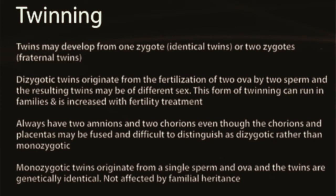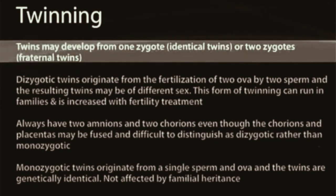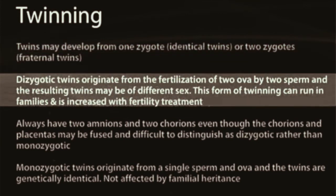Twinning in general will be a high-yield topic for board preparation. Twins can develop in two separate ways: one zygote, which gives you identical twins, or two zygotes, which gives you fraternal twins. Dizygotic twins come from the fertilization of two ova by two sperm, and the resulting twins will be of different sex. This form of twinning can run in families and is increased with fertility treatments.